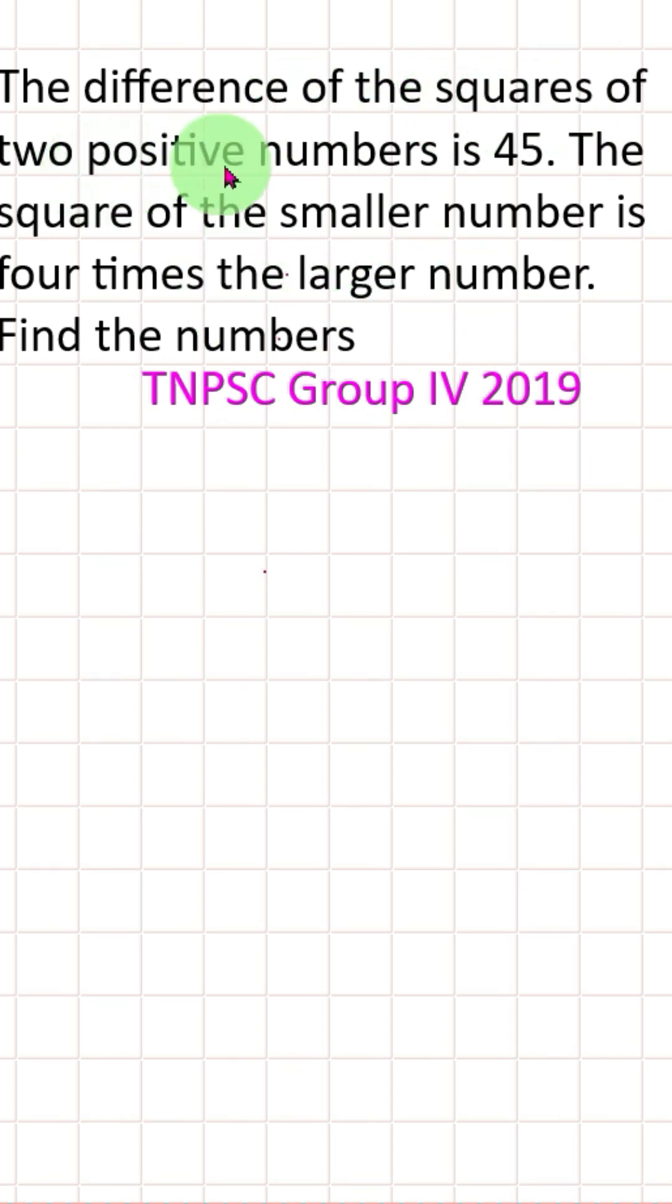Difference of squares of two positive numbers. One positive number, that is x square, minus the second positive number, y square. That value is equal to 45.